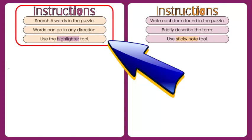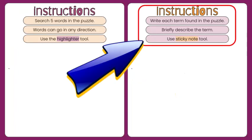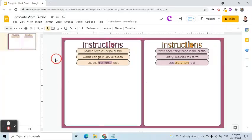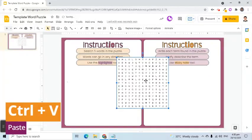For example, I will ask them to search for five words related to our topic, and words can go in any direction. I will explain later how they can use the Highlighter tool. I would also like my students to be able to define the terms they will find. So on the right side, I will ask them to put the words and descriptions using the Sticker Note tool. I will also explain later how to insert a Sticker Note. Earlier I copied the puzzle, so now I am going to press Ctrl-V to paste it to this slide.